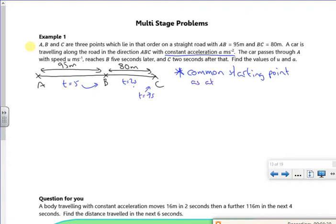As I am. I've got a u. So let's have a look from A to B, from A to B. So S is 95 metres. U is u. And V, I want u and a, so I'm not fussed about that. A is a, t is five.